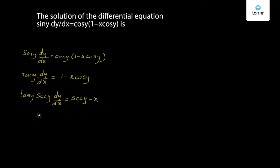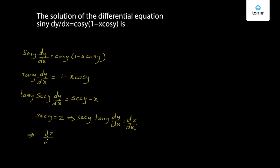Let us consider secant y as a new variable z. Differentiating this with respect to x, we have secant y tan y times dy by dx equals dz by dx. So the above equation changes to dz by dx is equal to z minus x.